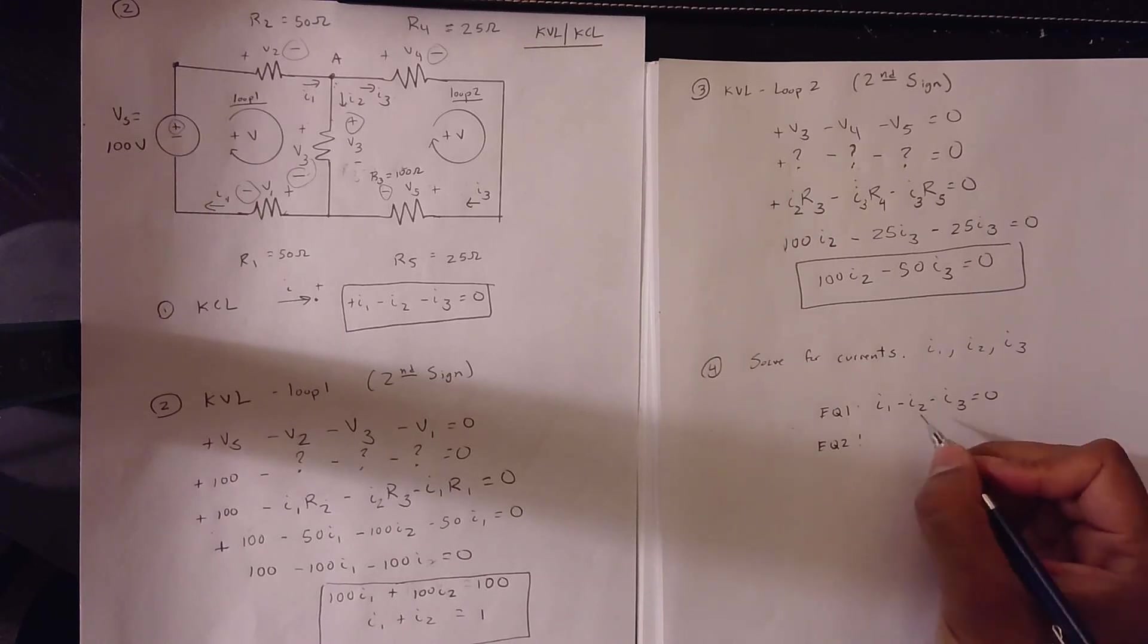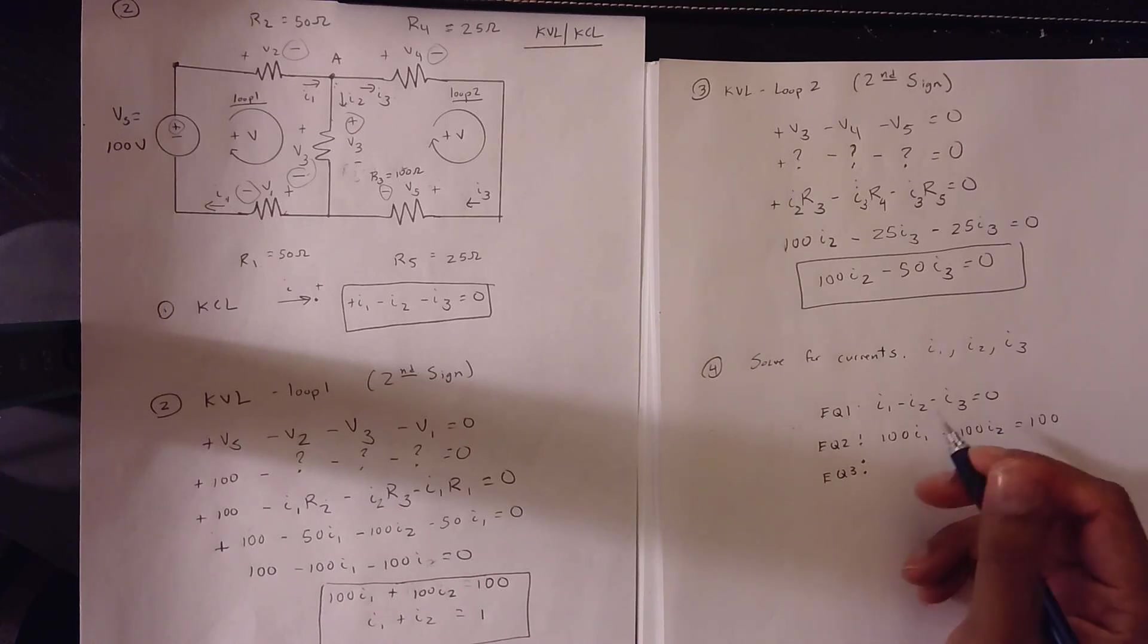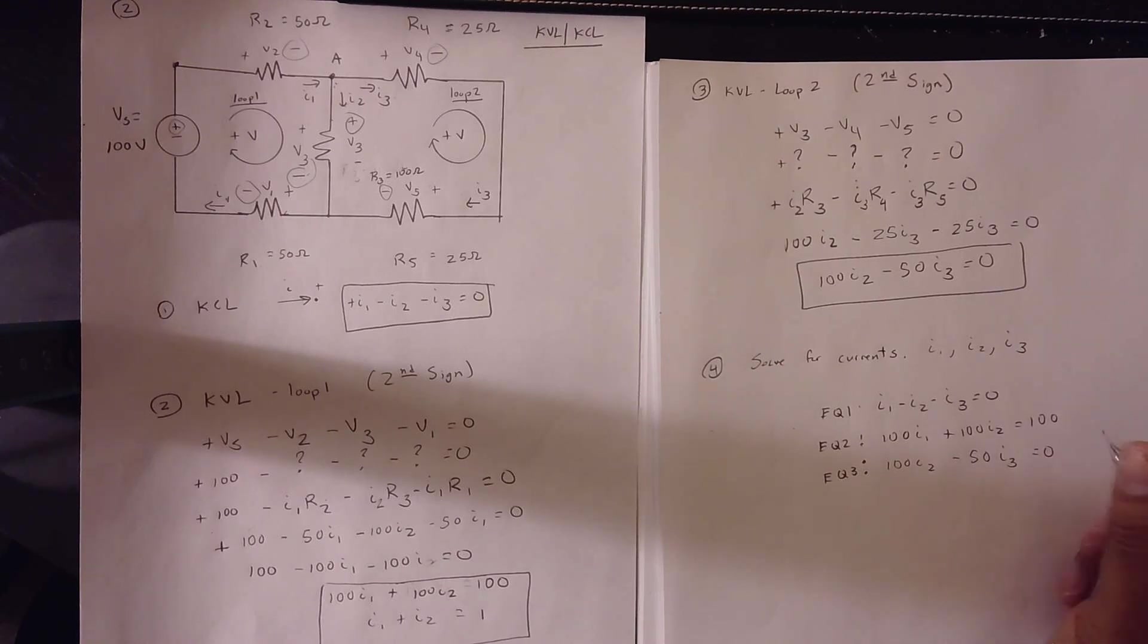Equation 2 is 100 I1 plus 100 I2 is equal to 100. And equation 3 is 100 I2 minus 50 I3 equals 0. And you're going to put this to Wolfram Alpha and you solve it.